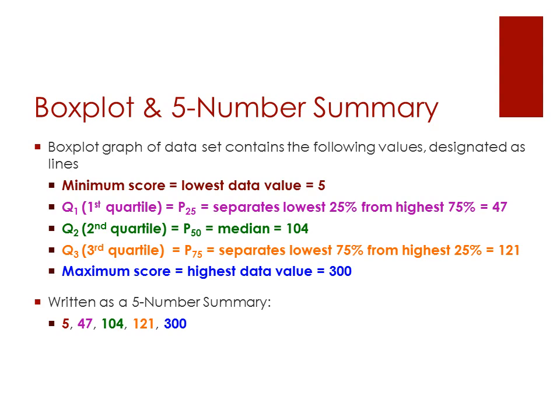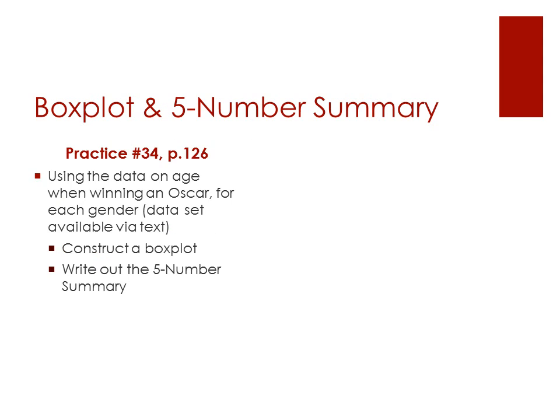This is what you would be entering for your homeworks or the exam. Let's do a practice problem. We're going to look at the data of age when winning an Oscar for each gender — the data is available in your text. We're going to construct a box plot and write out the five-number summary, similar to what you'd have for your homeworks and exams.